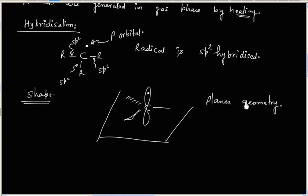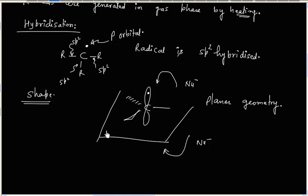Since the radical is planar, a nucleophile can attack from the top face or from the bottom face. Radicals are equally likely to be attacked from the top face or the bottom face.